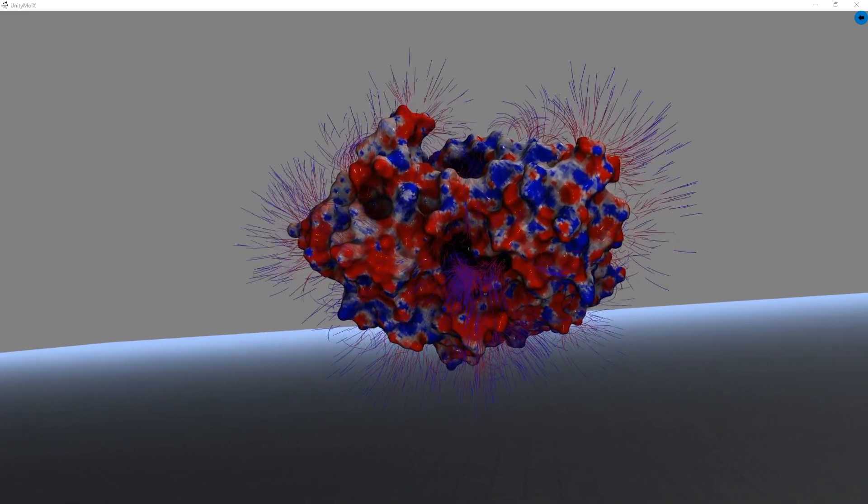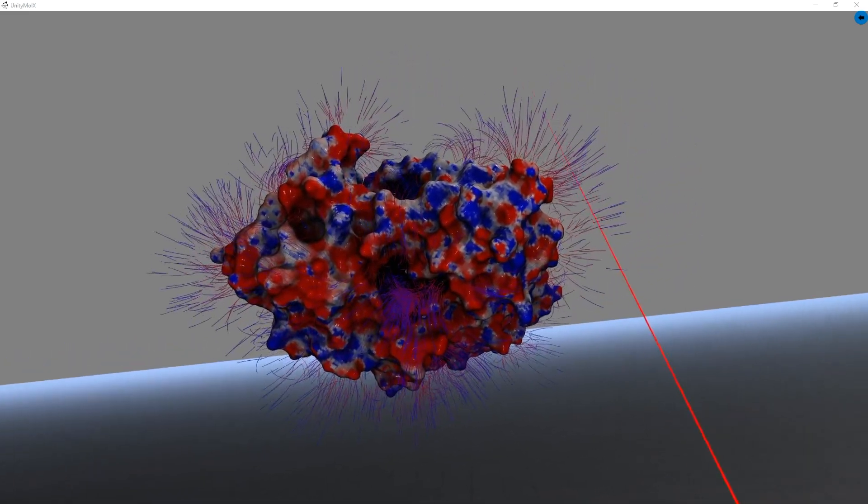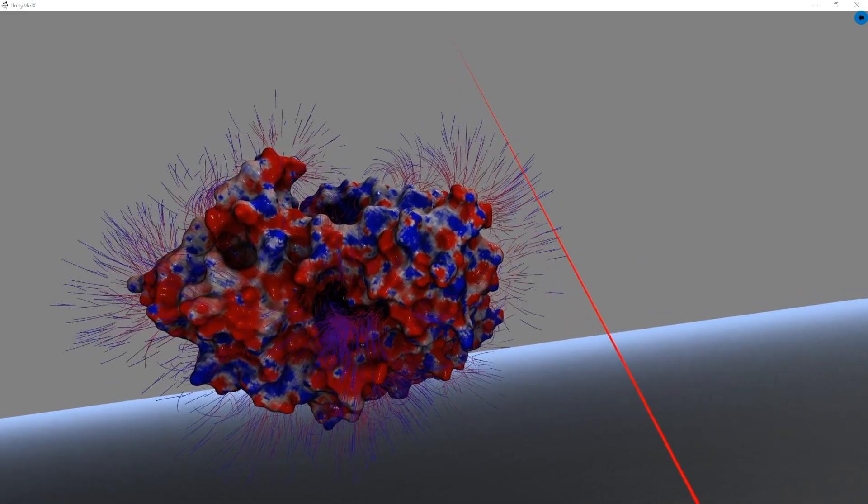We are also showing the animated electrostatic field lines, where they start in the red and terminate in blue.